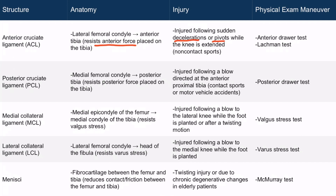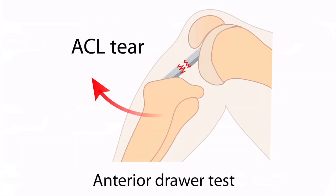These are most commonly associated with non-contact sports injuries. A great example would be an athlete who's running or jumping when they suddenly stop, or they jump in the air and land on the ground awkwardly. There are two exam maneuvers to identify the injury: the anterior drawer test and the Lachman test. In the anterior drawer test, the knee is bent to 90 degrees and force is applied on the tibia in a forward motion. If there is greater than expected laxity of the tibia in relation to the femur, the test is positive, indicating an ACL tear. The Lachman test is very similar, but the knee is positioned at a 30 degree angle and is considered more sensitive than the anterior drawer test.